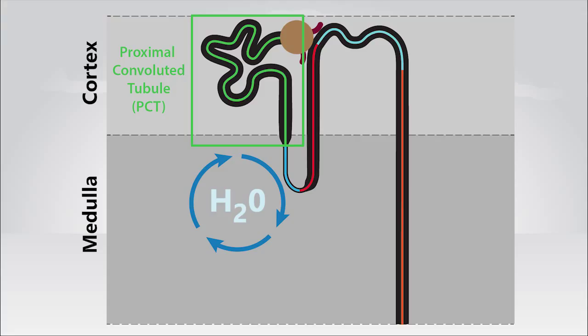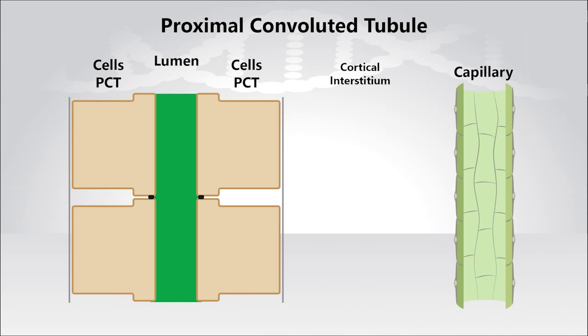So let's start this lesson by describing some basic facts about the proximal tubule and cortical interstitium. Here, we have an illustration of proximal tubule cells, the cortical interstitial area, and peritubular capillary.